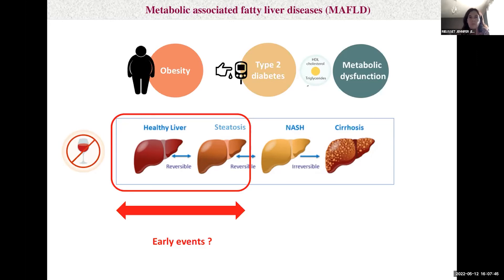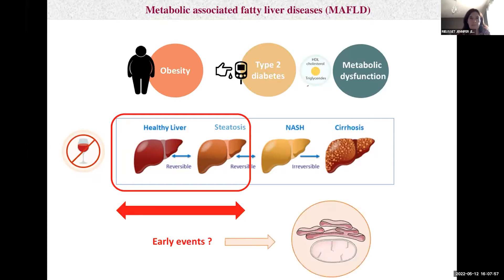Therefore, it's crucial to identify early molecular mechanisms leading to hepatic steatosis and metabolic dysfunction, such as hepatic insulin resistance, in order to identify new preventive or therapeutic strategies to improve whole body glucose and lipid homeostasis. For these reasons, we investigated the potential involvement of ER-mitochondria miscommunication as an early mechanism leading to hepatic metabolic alterations.